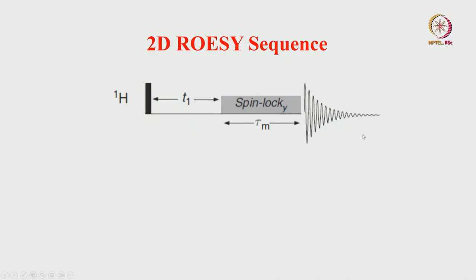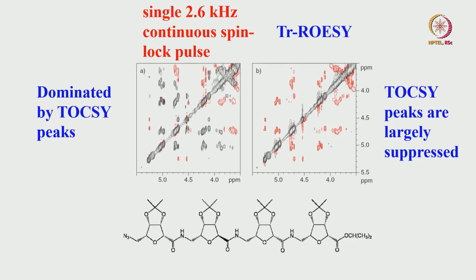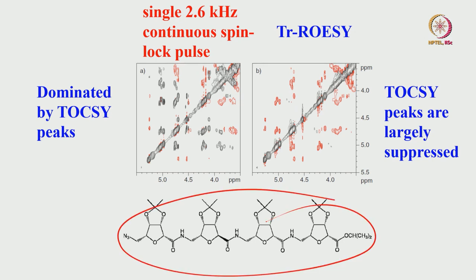We will continue with the 2D ROE sequence. There is a t1 period followed by spin lock — during the spin lock, chemical shift is completely refocused and mixing takes place between the spins — then you collect the signal. This is a simple example of a 2D ROE spectrum of a molecule; this is called ROESY.